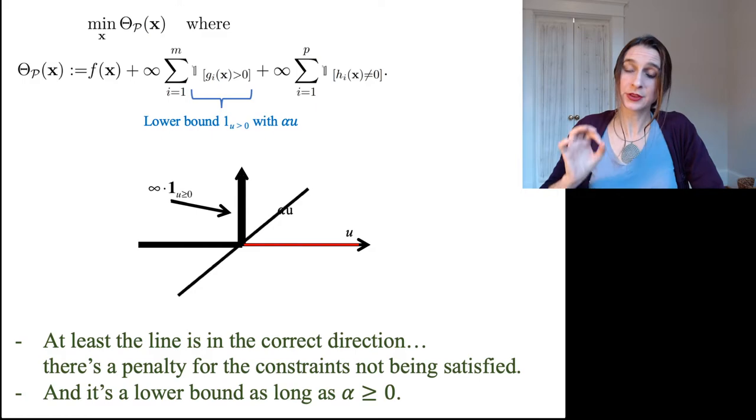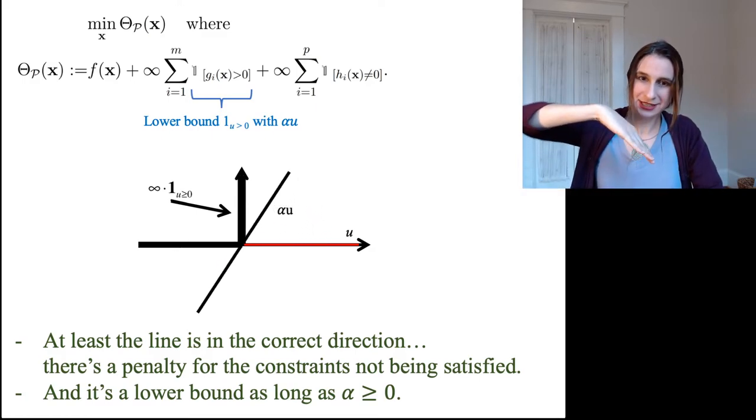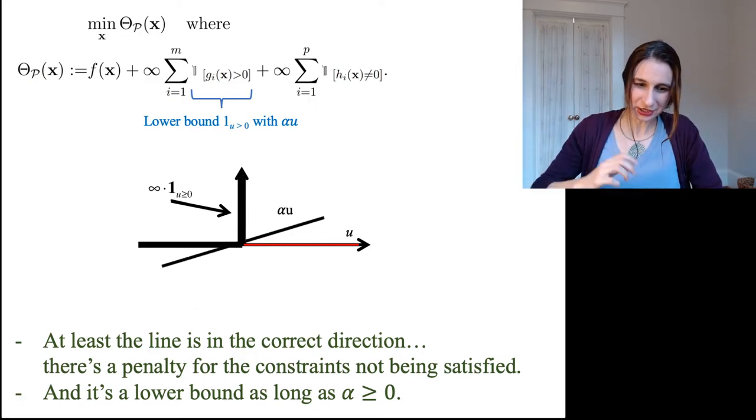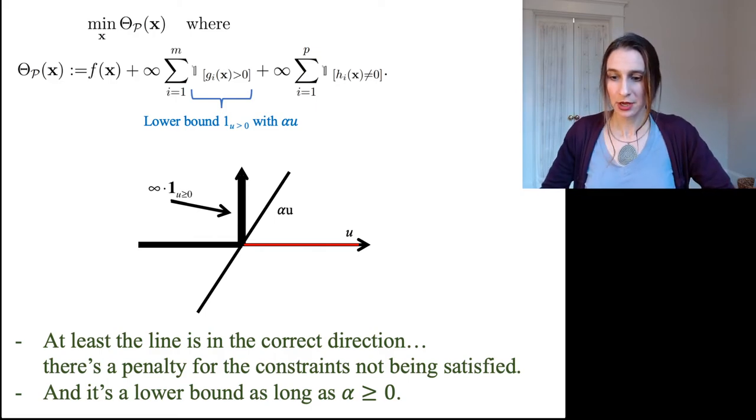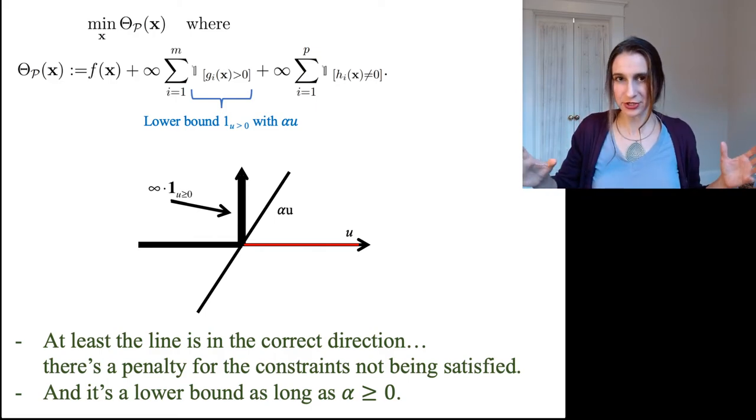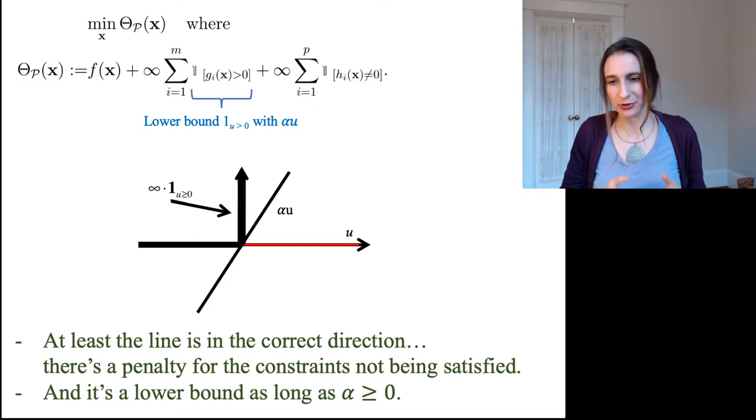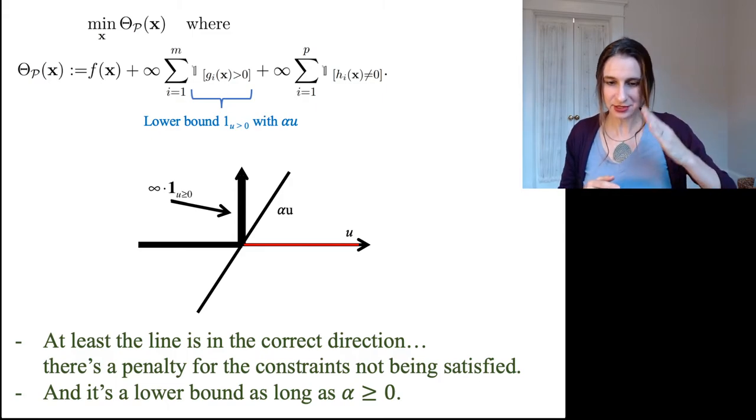Now, it's very, very important that alpha has a non-negative slope, because you see, if it had a negative slope, then it would actually violate, it wouldn't be a lower bound. It wouldn't be a viable lower bound. So throughout all of these lectures, I'm going to say over and over again, alpha, it has to be greater than or equal to zero. And now you know why. It's because this line is not a viable lower bound if alpha is negative.